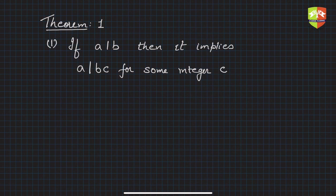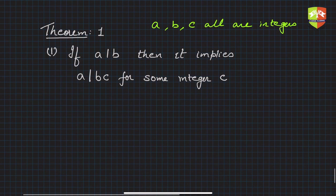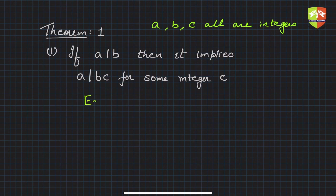In all of these, we are going to assume that a, b, c are all integers. Keep that in mind — everything we discuss here will be related to integers only. Any constant or variable we take up will also be an integer. Let's first understand this with an example and then we will try to prove it.